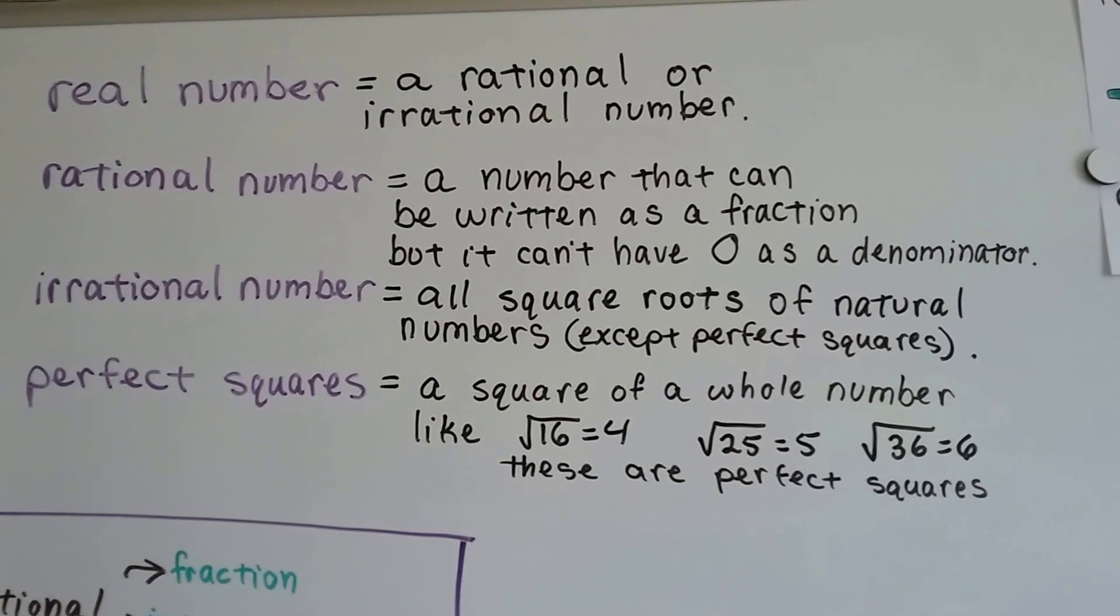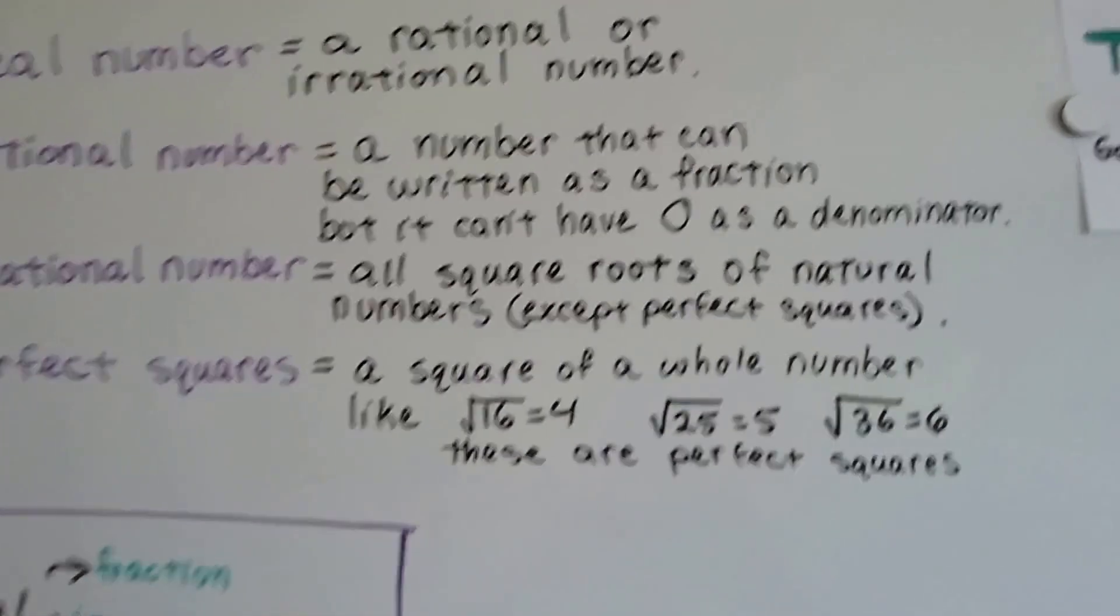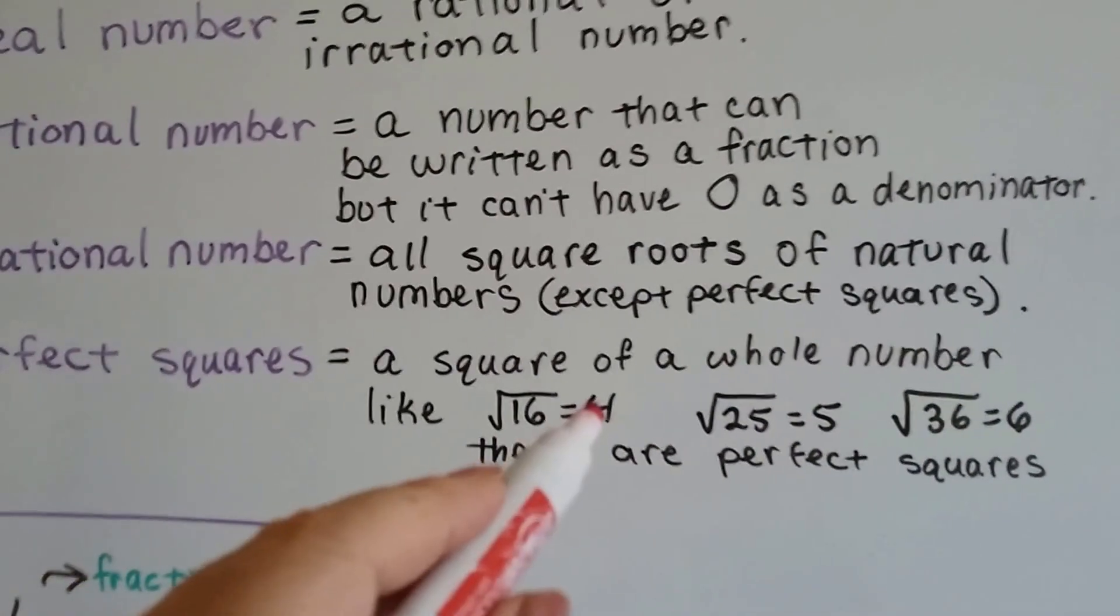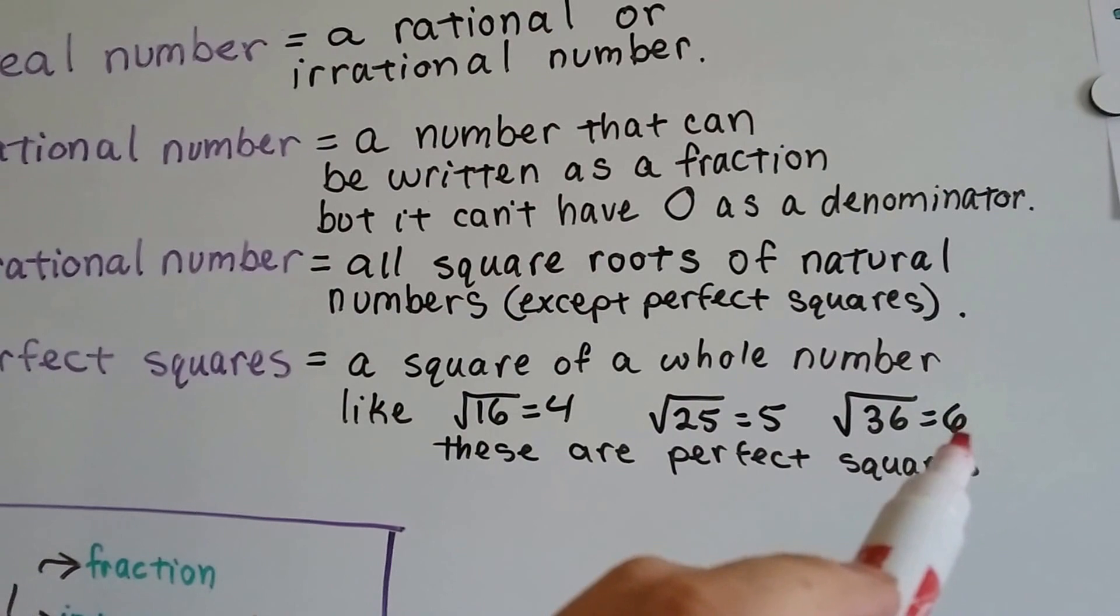What are perfect squares? Well, that's a square of a whole number, like the square root of 16 is 4, square root of 25 is 5, and the square root of 36 is 6.